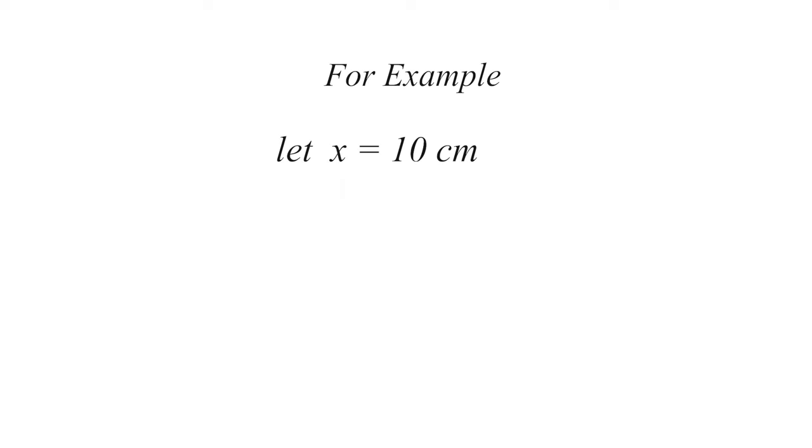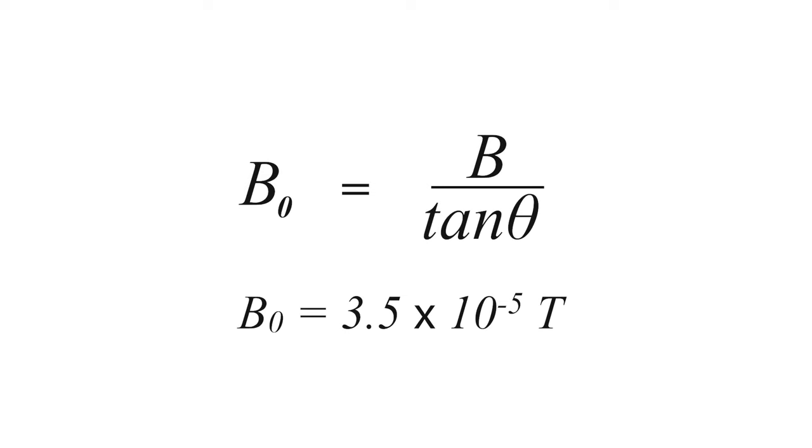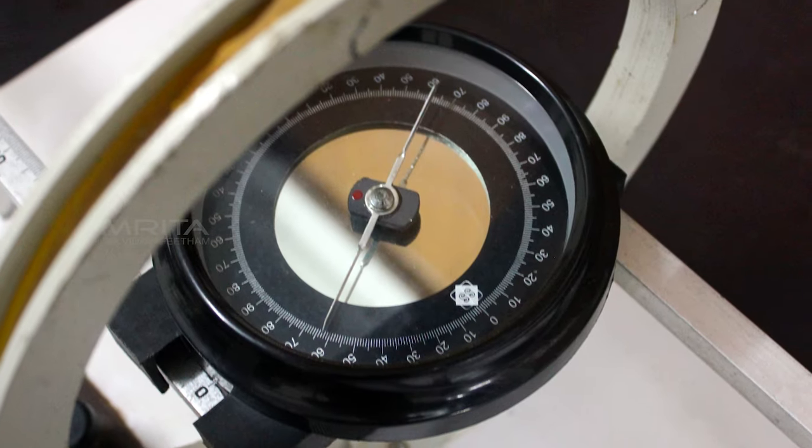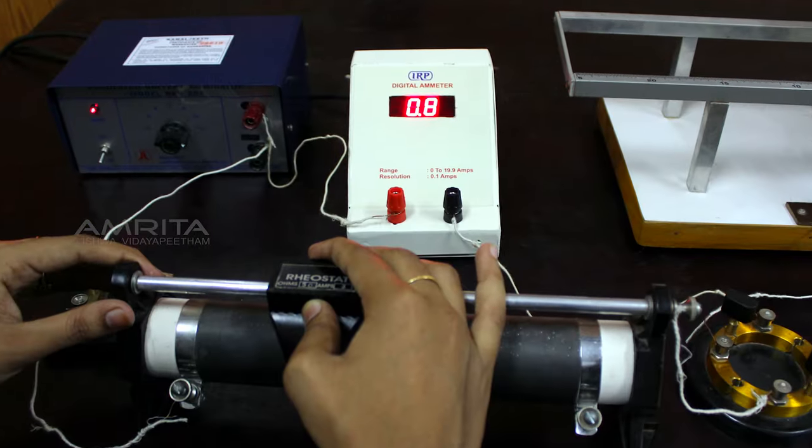By knowing the θ values and B values at different points, we can calculate the horizontal intensity of Earth's magnetic field B0 using the equation B0 = B/tan θ, which is a constant. The experiment can be repeated for different number of turns of the coil and for different currents.